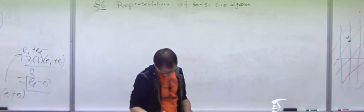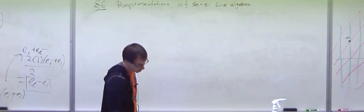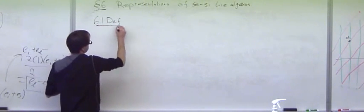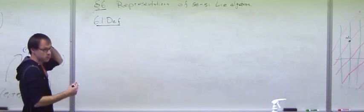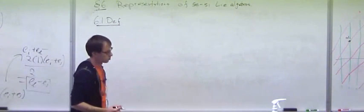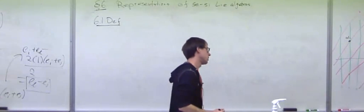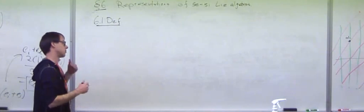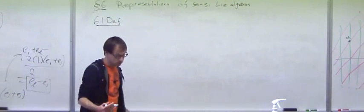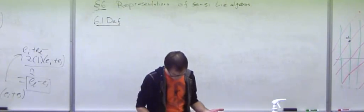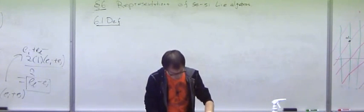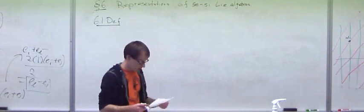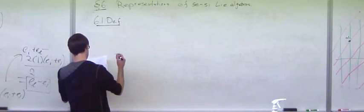And the important definition here is the character. So remember, the trick is always the same. We start with a representation of G, and we fix a Cartan subalgebra H. Then we restrict the representation we got to H. Then we do the weight space decomposition. An interesting question: what are the dimensions of the individual weight spaces? And we capture these in the following generating function.